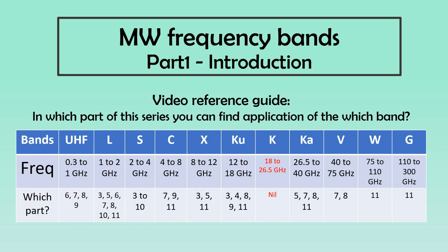Also, the same principle is behind selecting red color for stop signals and danger lights — do check out our short video explaining this topic, the link of which you can find in the description below. With this understanding, let us look at different applications of the microwave frequency spectrum. Since the applications are spread over multiple videos, the list here shows which microwave frequency band is covered in which video — this is for people interested in specific frequency bands. With this, we come to the end of the introduction part.